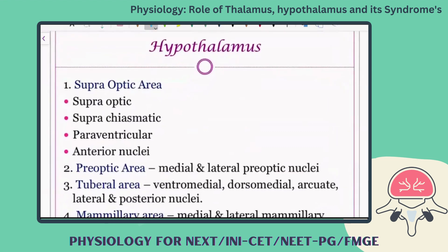Now we will move on to the next part of the cerebral hemisphere: the hypothalamus. Hypothalamus is the control center for the autonomic nervous system, endocrine system, and temperature regulation.